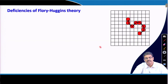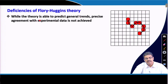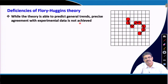Now, there are deficiencies in Flory-Huggins theory. This theory is able to predict general trends and several thermodynamic properties can be explained using Flory-Huggins theory, but precise agreement with experimental data is not achieved.